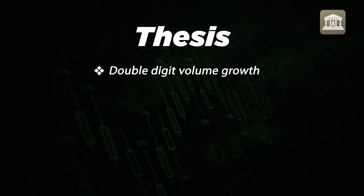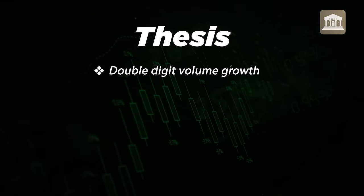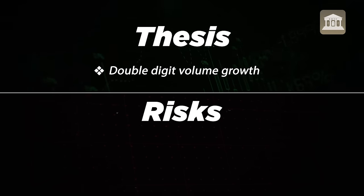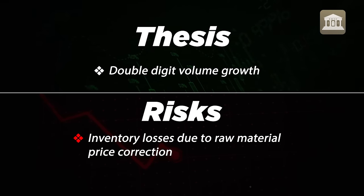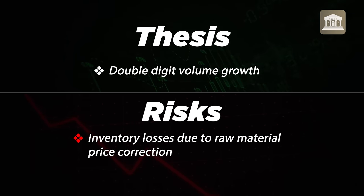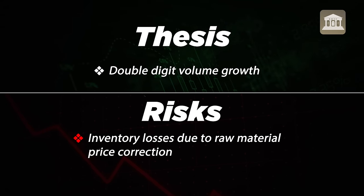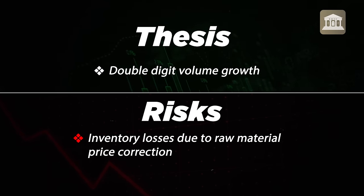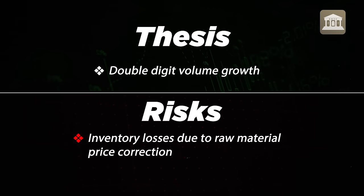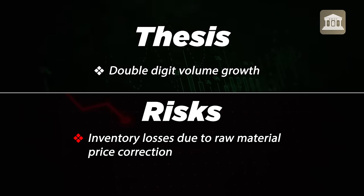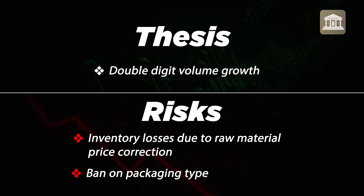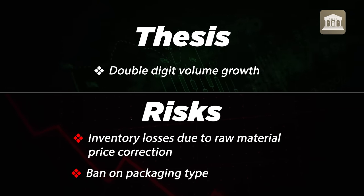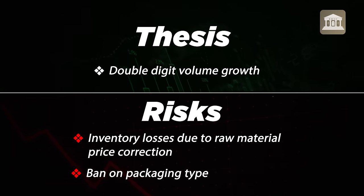The packaging industry is growing in double digits. However, risks include inventory losses when raw material prices correct, causing margin impact. Over the last 3 years margins have been very sustainable. One risk is that if a brand in the liquor industry changes its packaging type, their business can fall overnight. So TCPL Packaging is a proxy to FMCG and consumption plays available in India.